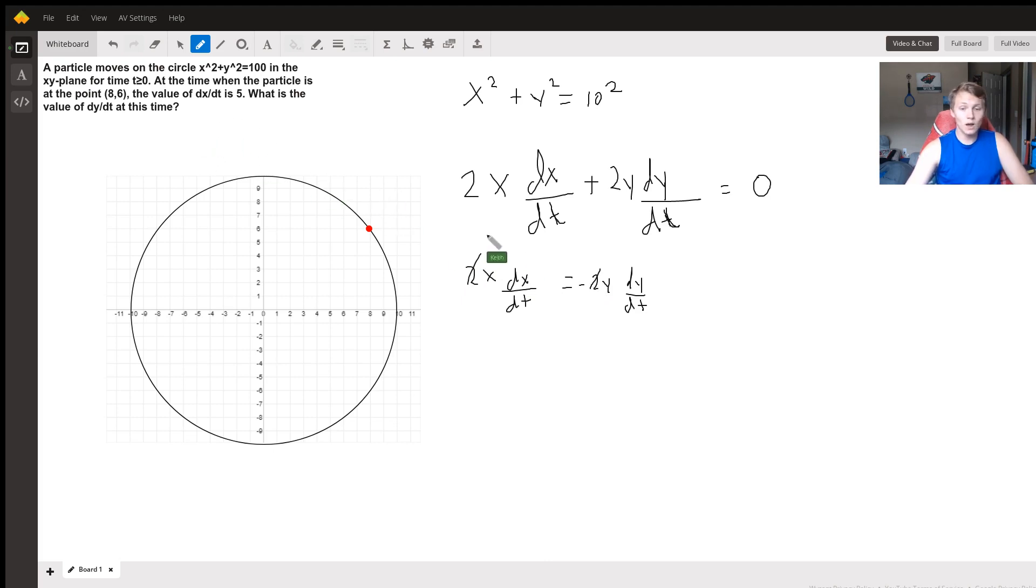So let's do that. We have that x is equal to 8, so 8 times dx/dt is 5, equals negative y is 6 times dy/dt. And now we just divide everything over. And so at this point we have that 40 divided by negative 6 is equal to dy/dt. So 40 divided by negative 6, that's going to be equal to negative 20 thirds is equal to dy/dt.